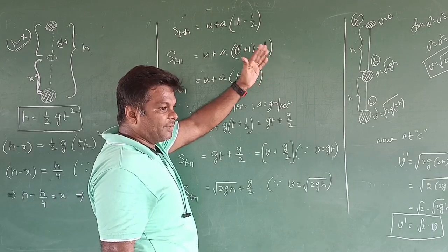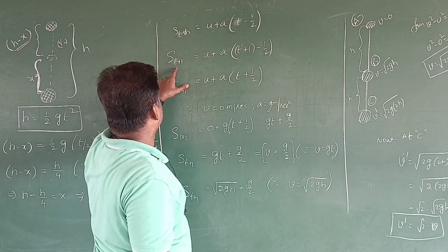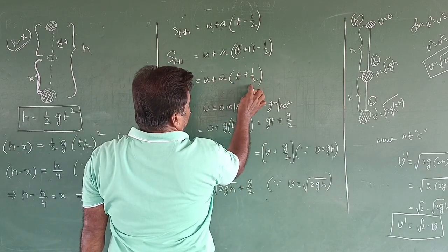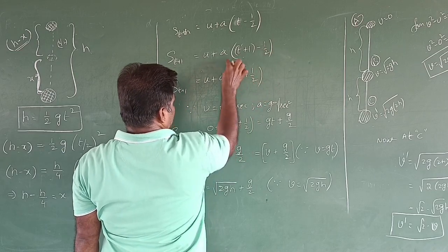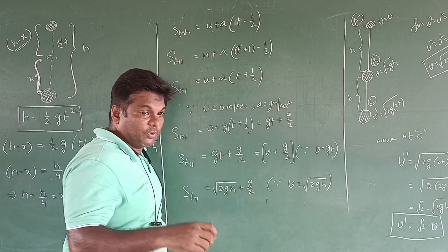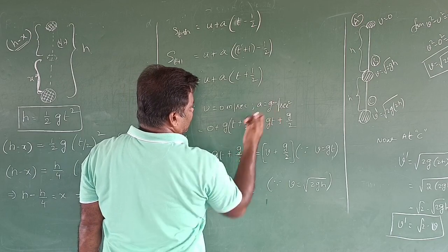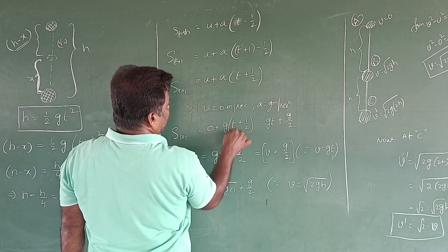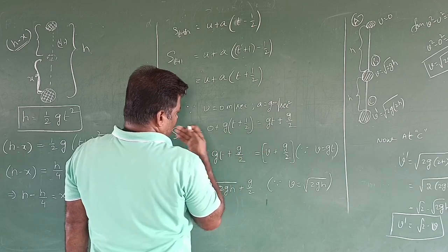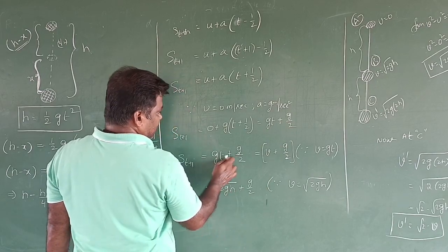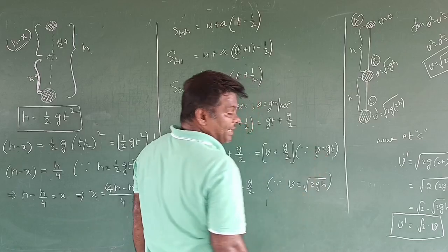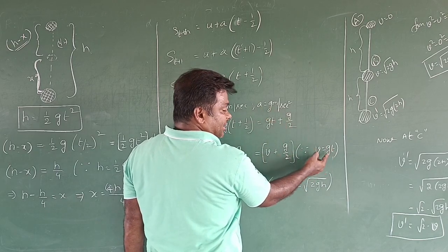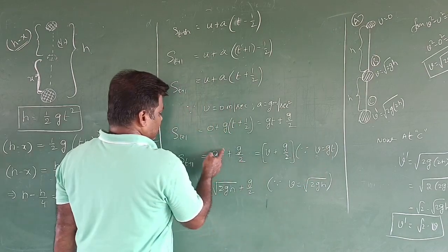The distance covered in t seconds is s equals u plus a into t minus half. In the next second, that means at t plus 1 seconds, the distance covered is s of t plus 1 equals u plus a into t plus 1 into half. When the body is falling freely, its initial velocity u is zero and acceleration a equals g. Substituting: zero plus g into t, you get gt plus g into 1 by 2, which gives gt plus g by 2.